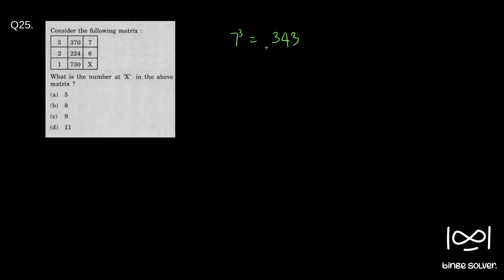So 7 cube, and 3 cube is 27. If you add these two, you get 370. So sum of the 7 cube plus 3 cube is 370.